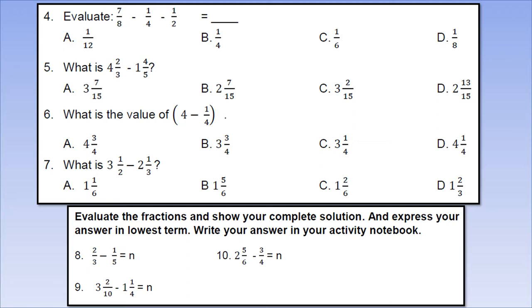Number 6: What is the value of 4 minus 1/4? A. 4 and 3/4, B. 3 and 3/4, C. 3 and 1/4, D. 4 and 1/4? Number 7: What is 3 and 1/5 minus 2 and 1/3? A. 1 and 1/6, B. 1 and 5/6, C. 1 and 2/6, or D. 1 and 2/3?